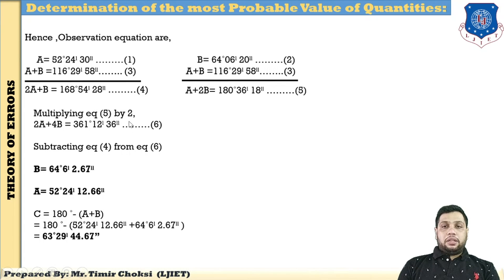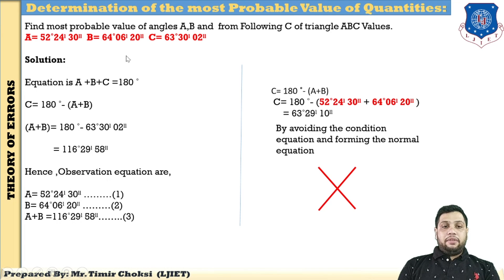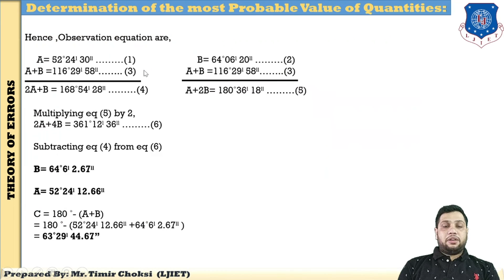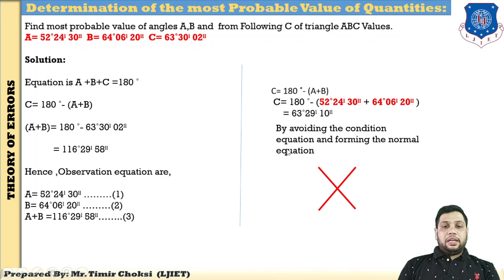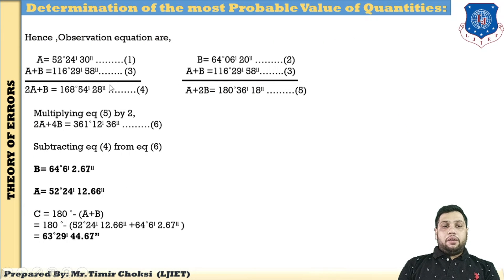Solve the normal equations to find the correct values. B = 64°06'2.67" — note that the original observed value of B was 64°06'20", which is not the most probable value; 64°06'2.67" is the corrected value. Similarly find A. Then using the condition equation C = 180° − (A + B), find the correct value of C = 63°29'44.67". The key point: use only observation equations to form normal equations, then apply the condition equation only to find C.